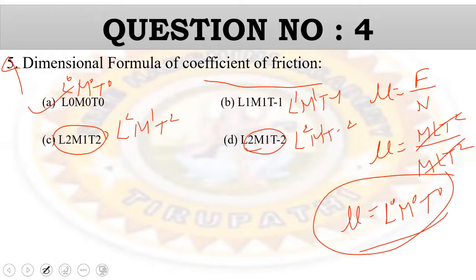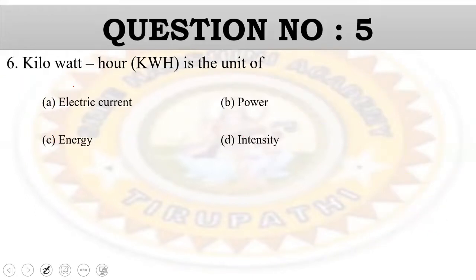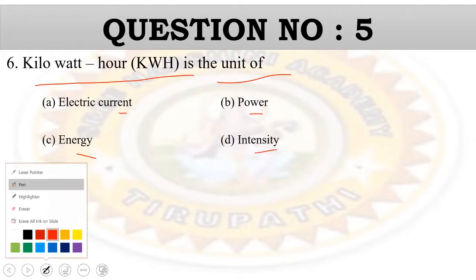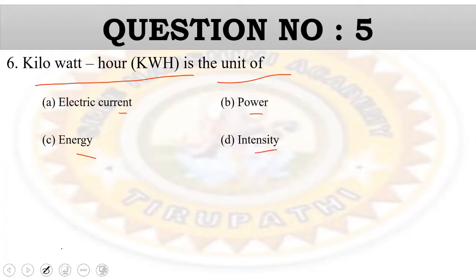Question number 5: Kilowatt hour is the unit of which quantity? The options are electric current, power, energy, and intensity. Kilowatt hour is the unit of energy.